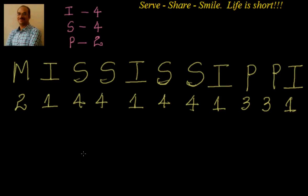Now let's start. The first step is to go from left to right and see how many numbers are less than that particular number. So less than 2, how many numbers are there? 1, 2, 3, 4 — so we write down 4. Less than 1, how many are there? 0. Less than 4, how many are there? 1, 2, 3, 4, 5 — so we have 5.